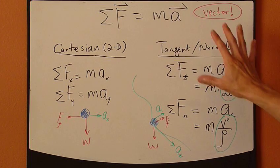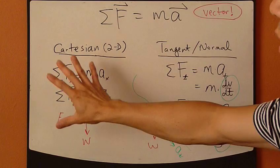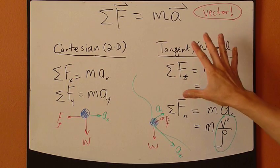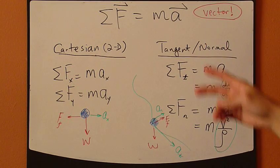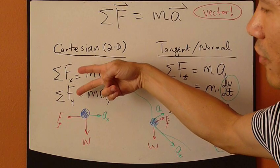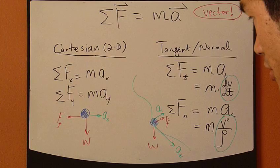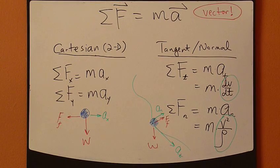So you apply second law according to the coordinate system that you've chosen, and then write it in each of the directions before you actually plug in the numbers. So next, let's look at examples.